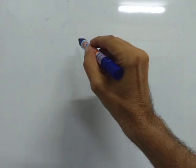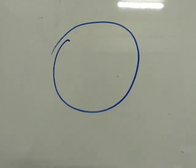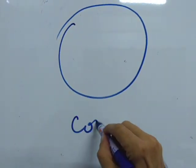What do you do when you want to draw a circle? Well, you use a compass, right? You use a compass to do this.